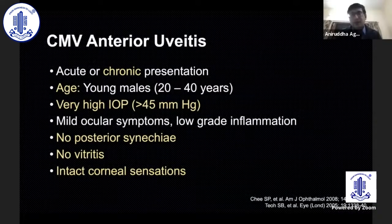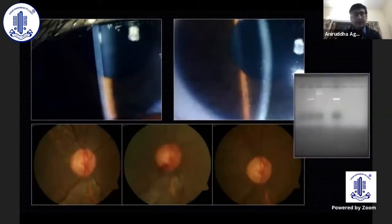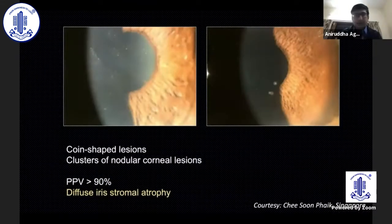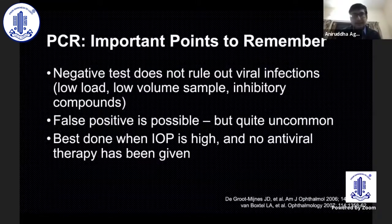Cytomegalovirus is important because, although it belongs to the herpes family, it has a different phenotype and may even present chronically. These patients typically have very high intraocular pressure of more than 45, no posterior synechiae, no vitritis, and intact corneal sensations — several key differences from HSV and VZV. These patients can develop secondary glaucoma, and in children, glaucomatous changes may reverse if treated on time. Corneal examination is important for coin-shaped nodular corneal lesions, which have a very high positive predictive value. Remember: a negative PCR does not rule out viral infection; it may reflect low viral load, low sample volume, or inhibitory compounds. False positives are very uncommon. The best time to perform a PCR is when pressure and inflammation are high and no antivirals have been given.